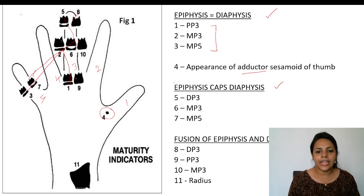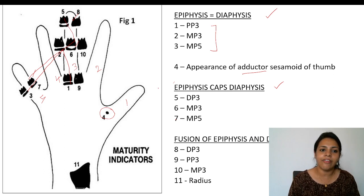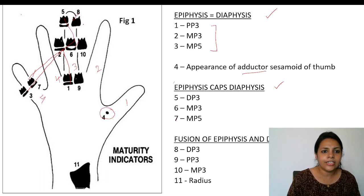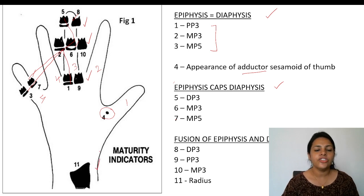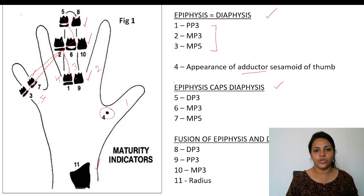The final stage is fusion of epiphysis and diaphysis — stages eight through eleven. Under this category, it starts from the distal phalanx of the third finger, then proximal phalanx of the third finger, then middle phalanx of the third finger — all of the third finger — and finally fusion of the epiphysis and diaphysis of the radius.